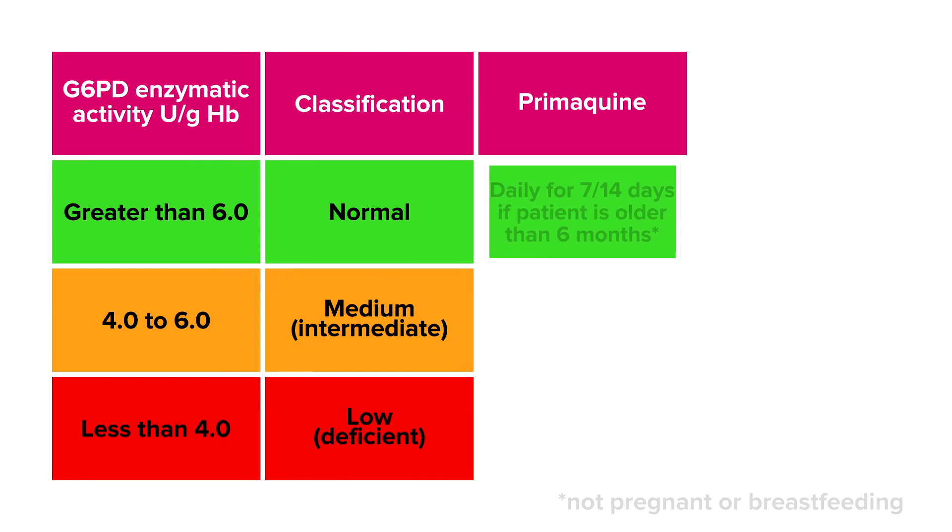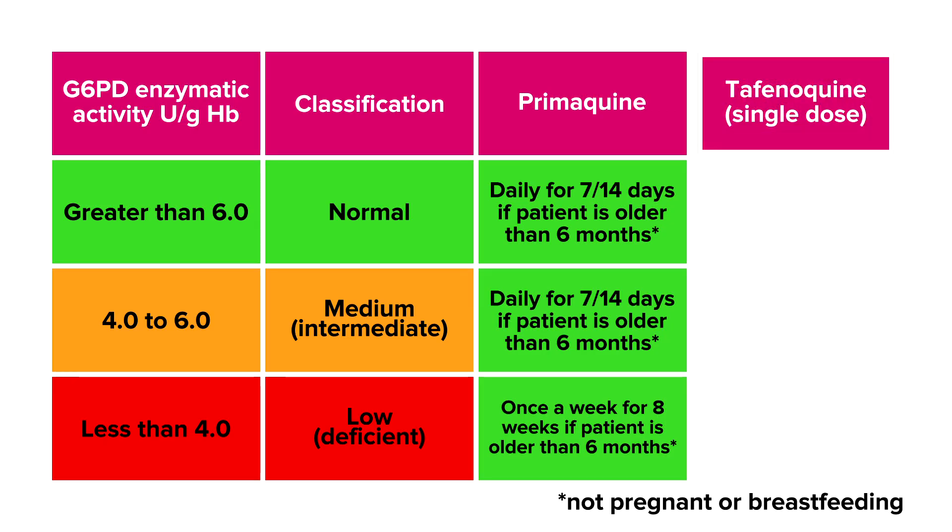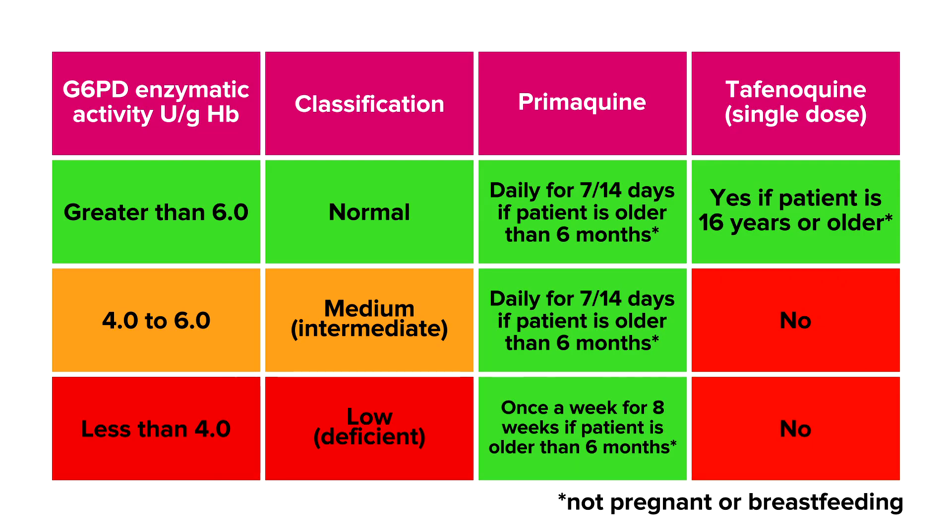Anything greater than 4.0 and the patient is eligible for daily Primaquine, providing they are older than 6 months, not pregnant or breastfeeding. Anything greater than 6.0 and the patient is eligible for Tafenoquine treatment, providing they are 16 years and older, not pregnant or breastfeeding.